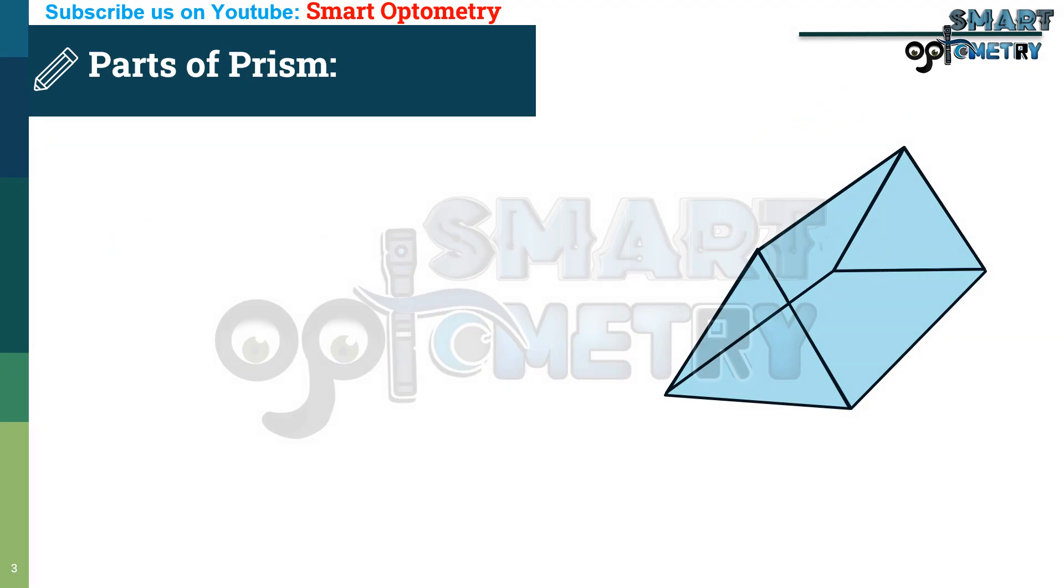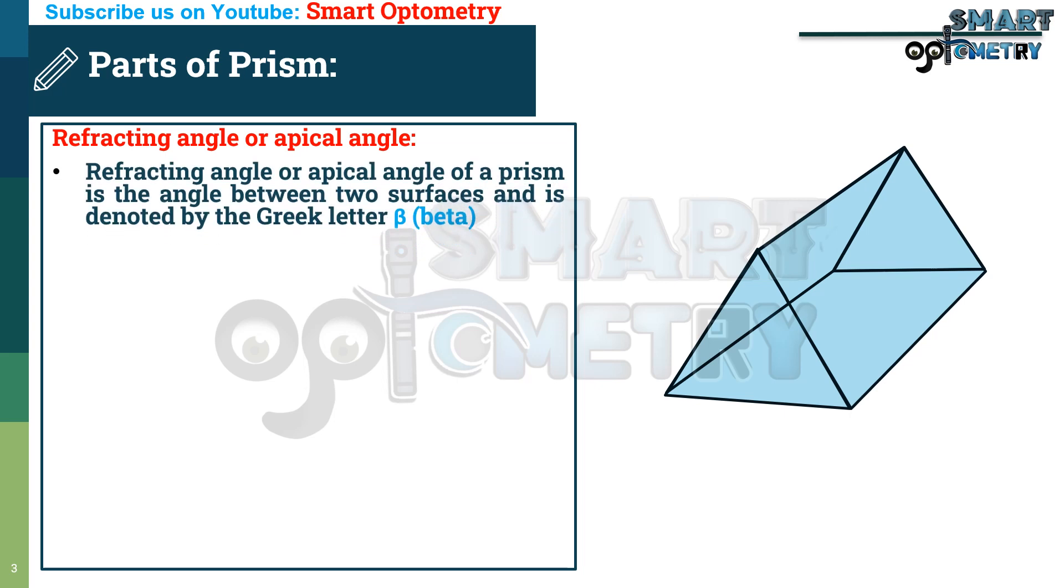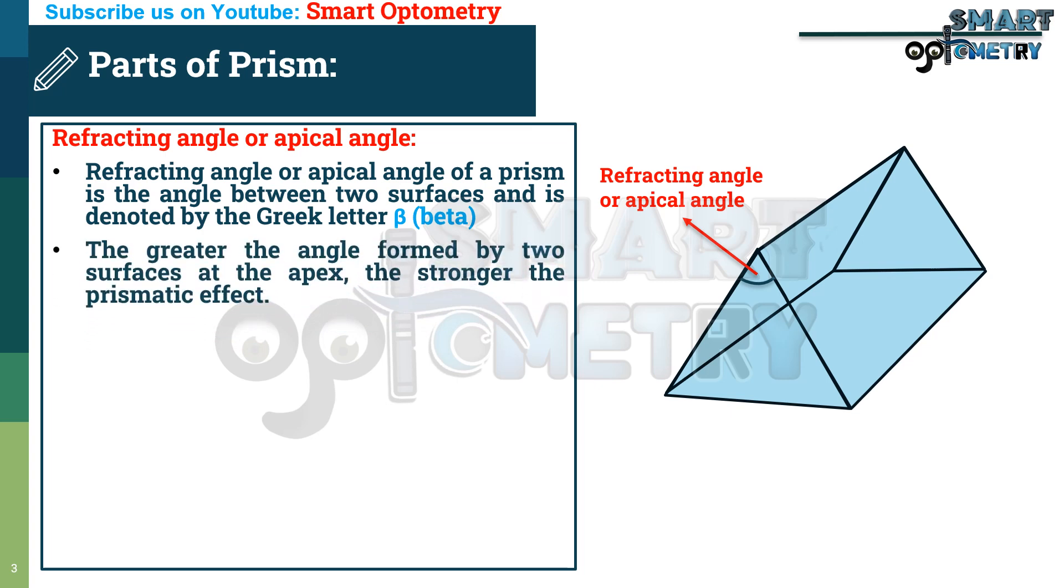Now, parts of prism. Refracting angle or apical angle of a prism is the angle between two surfaces and is denoted by the Greek letter beta. This is the apical angle of this prism which is formed by the two surfaces of this prism. The greater the angle formed by the two surfaces at the apex, the stronger the prismatic effect.